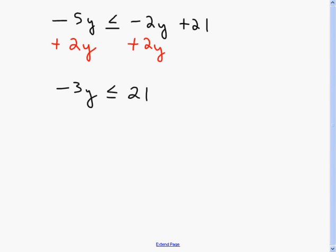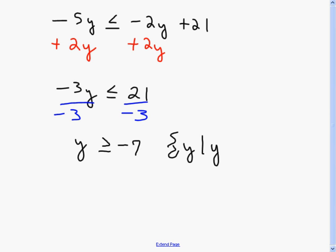Adding 2y to both sides gives negative 3y is less than or equal to 21. Just like solving negative 3y equals 21, I divide both sides by negative 3. Since I divided by negative 3, that less than or equal to reverses and becomes greater than or equal to. Then 21 divided by negative 3 is negative 7. So I get y is greater than or equal to negative 7, which is the set-builder notation.